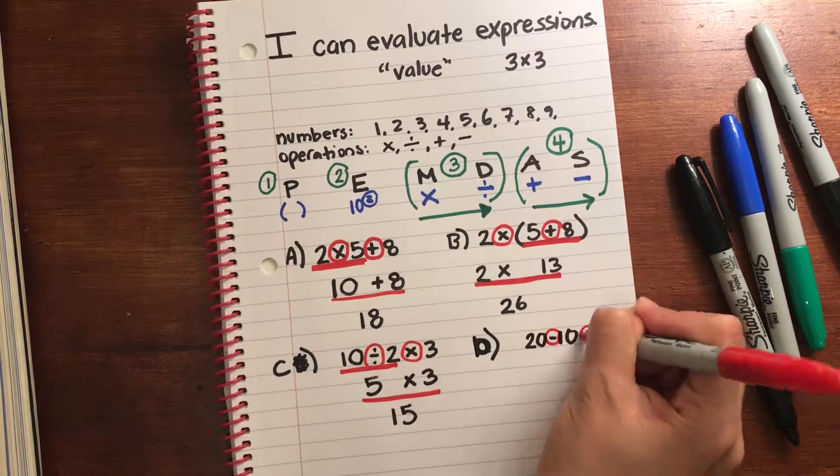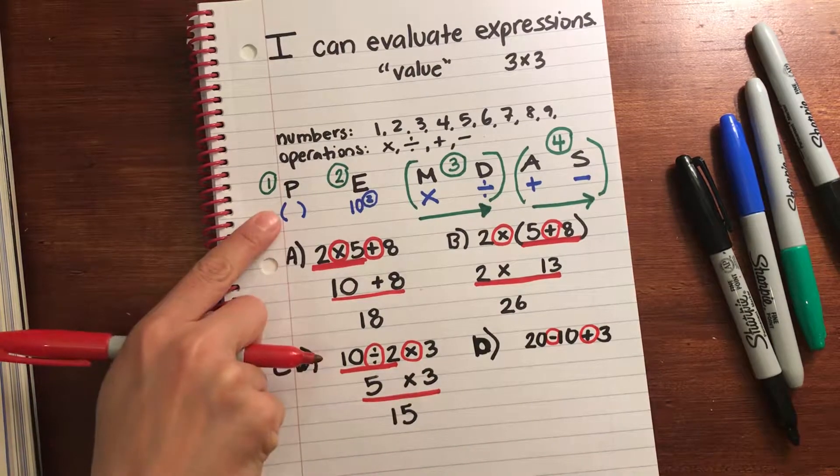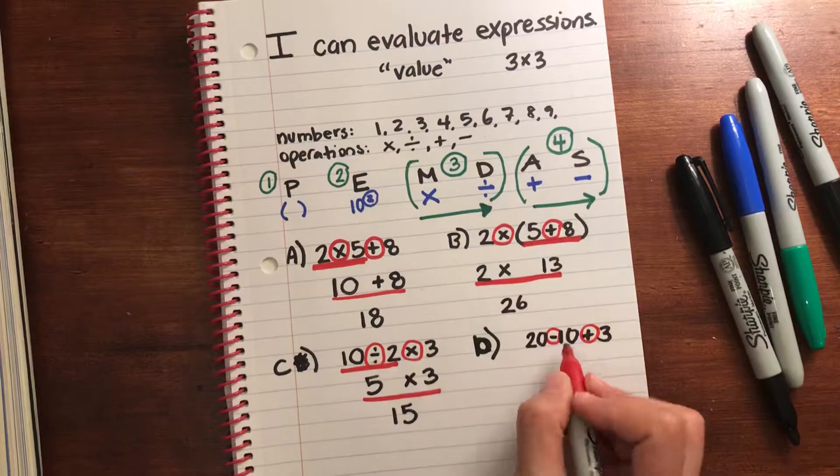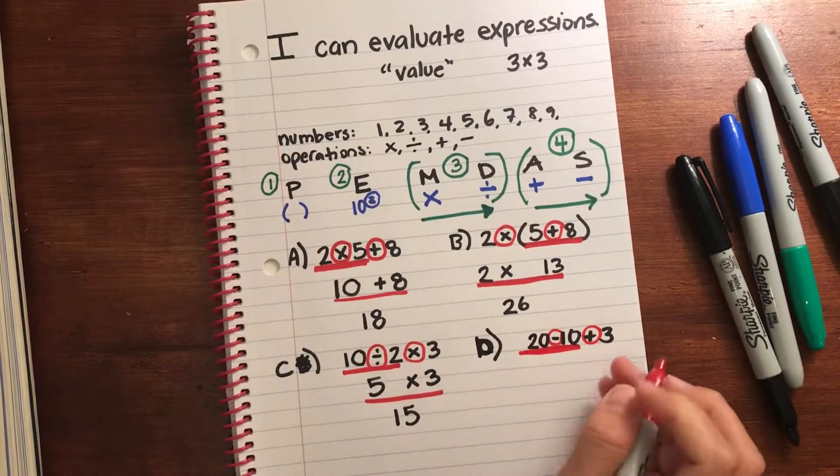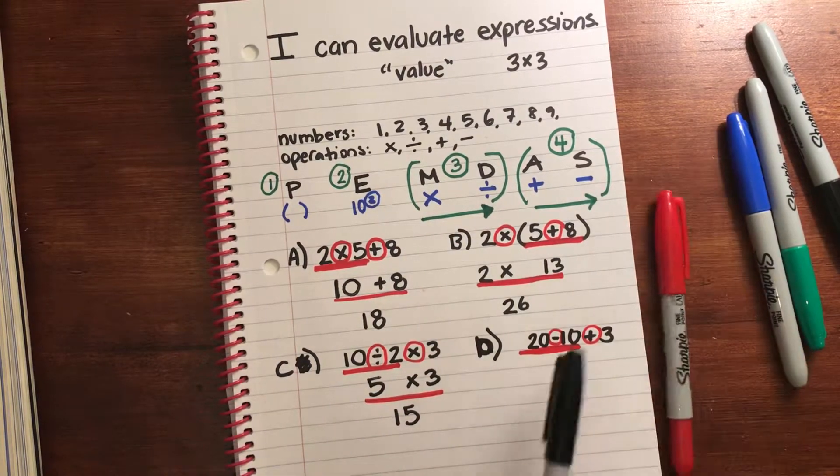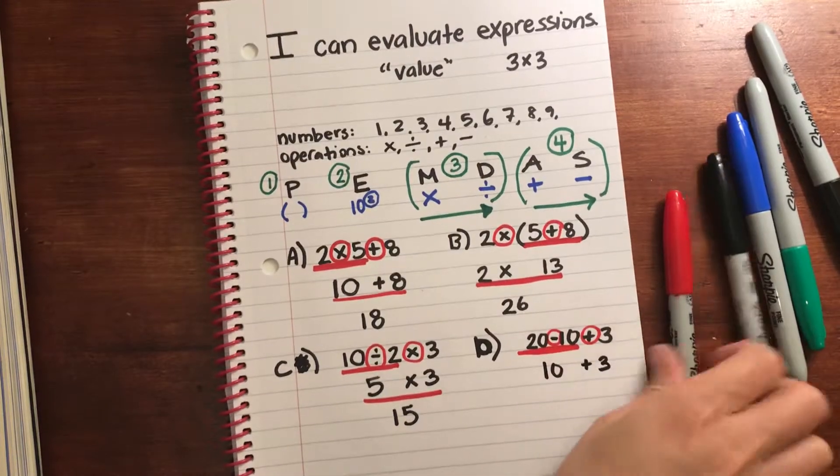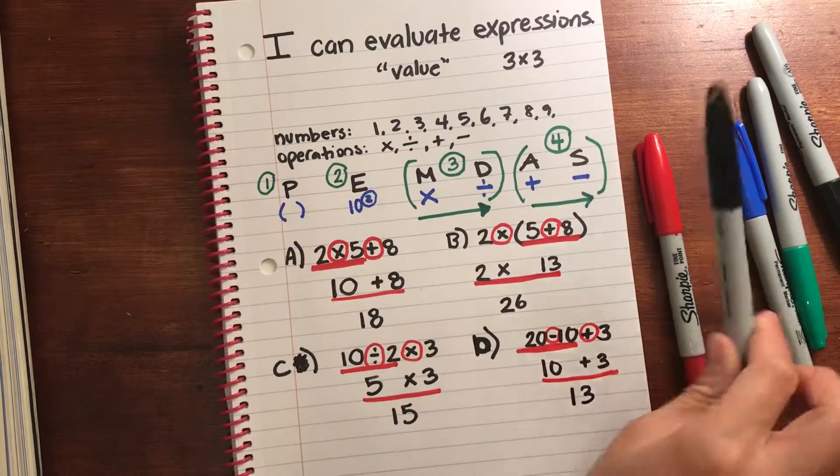I have two operations. I have subtraction and addition. No parentheses, no exponents, no multiplication or division. I did this intentionally. And looking at addition and subtraction, I will perform this operation first because it's further left, and addition and subtraction are in the same grouping. Underline the operation you're performing. Bring down the rest of the problem. Underline and evaluate.